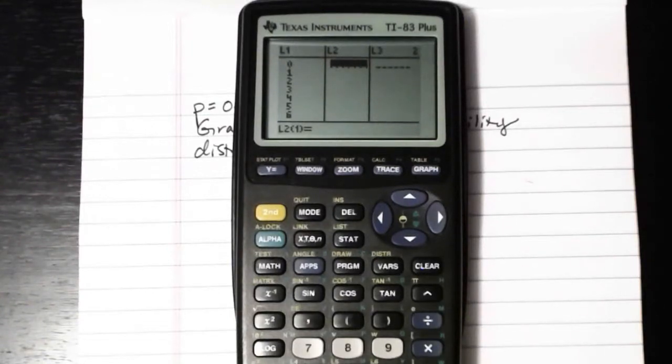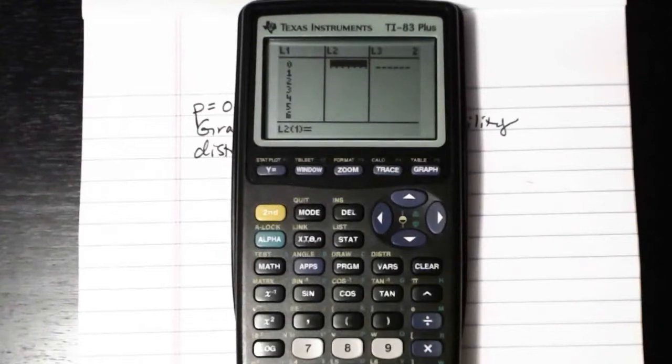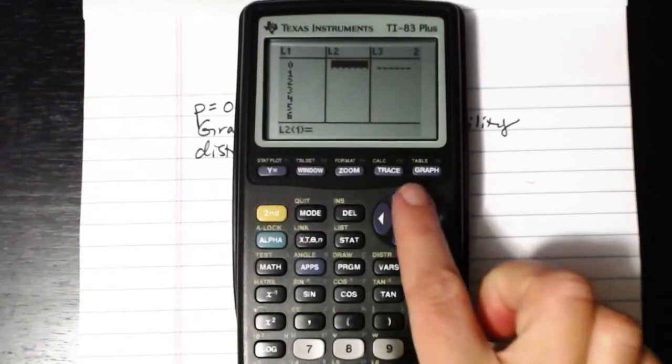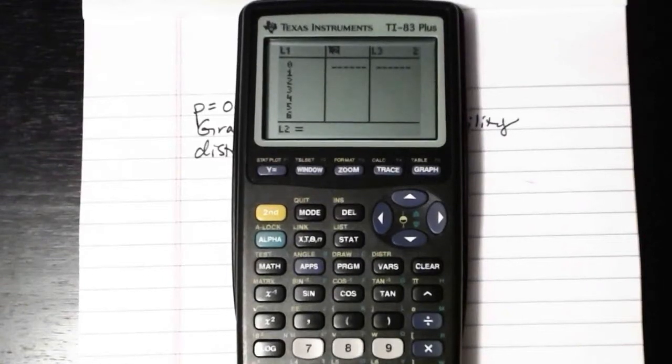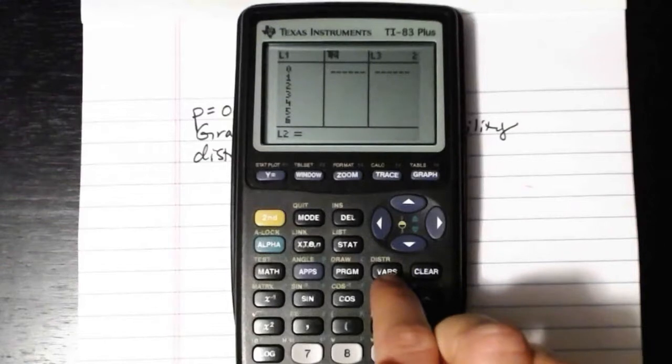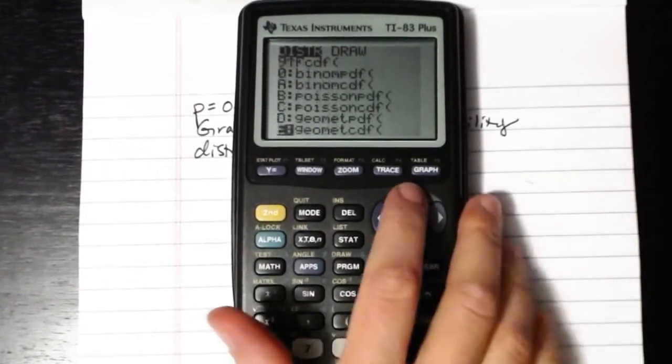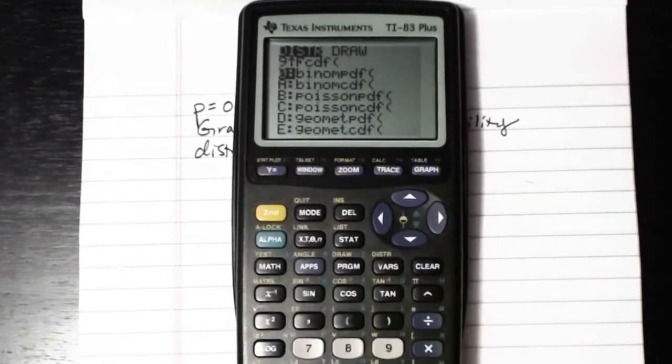And then in the second list, into list two, that's where we're actually going to put the binomial probabilities associated with each of those numbers of successes. So what is the probability of having exactly zero successes and one success and two successes and so on and so forth. Now you can ask your calculator to do this for you all at once, so you don't have to compute each one manually. The way that we'll do that is we'll scroll up until the actual name of the list is highlighted, until list two itself is highlighted. Then we will go into our distributions menu, so second vars to go into the distributions menu. We want to scroll all the way down toward the bottom to find binompdf. That's what we want. We will select it.